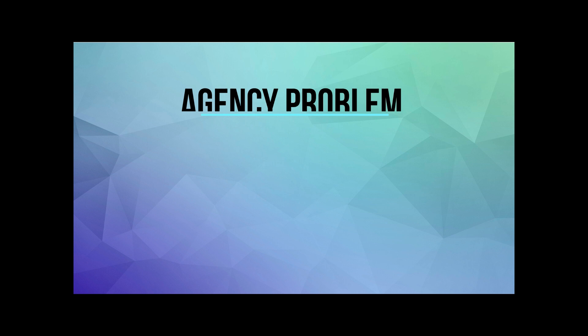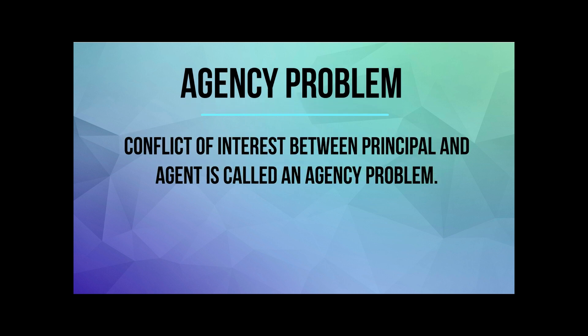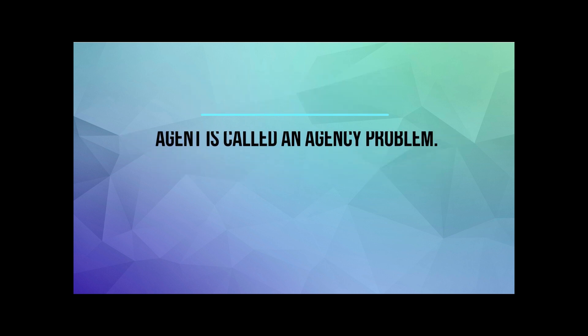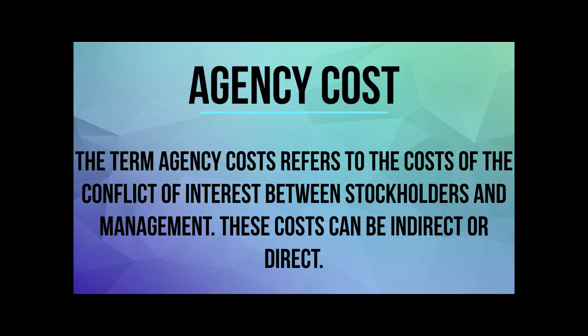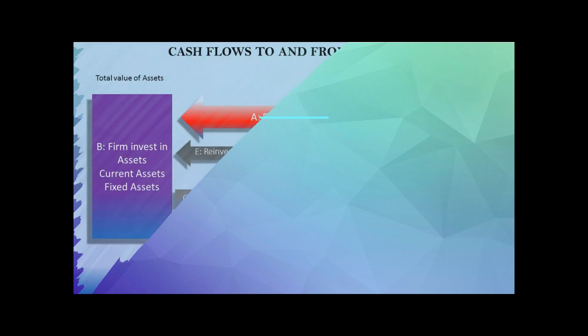Whenever there is an agency relationship, there is a possibility of an agency problem as well. The agency problem is defined as a conflict of interest between the principal and the agent. With the agency problem comes agency cost, which refers to the cost of the conflict of interest between stockholders and management. These costs can be direct or indirect.